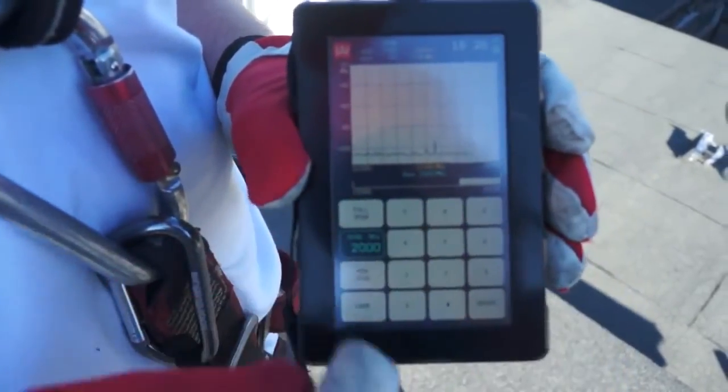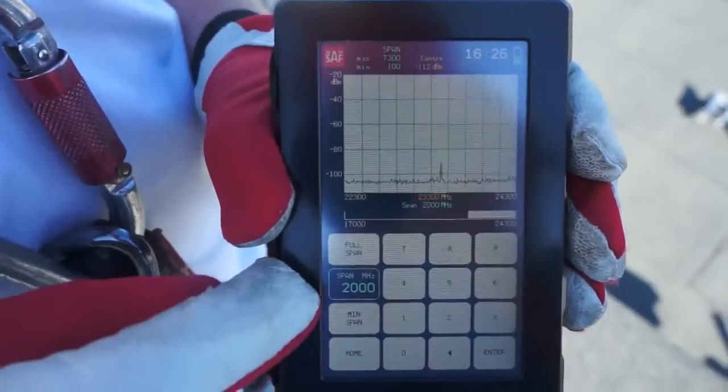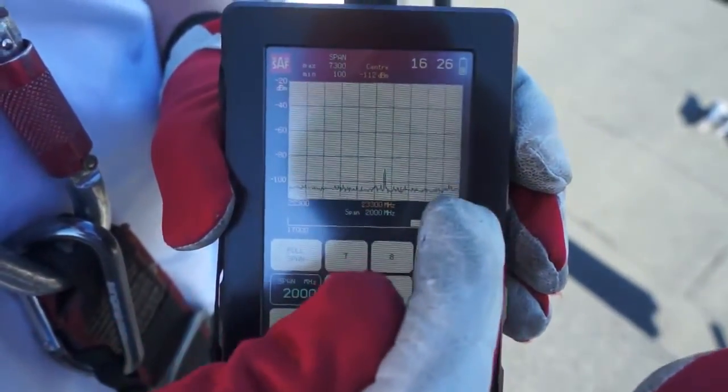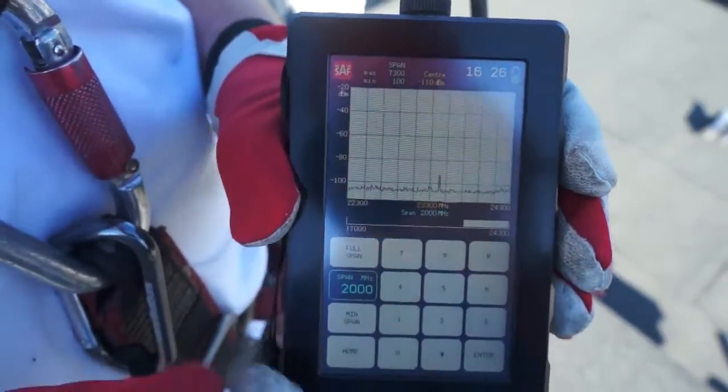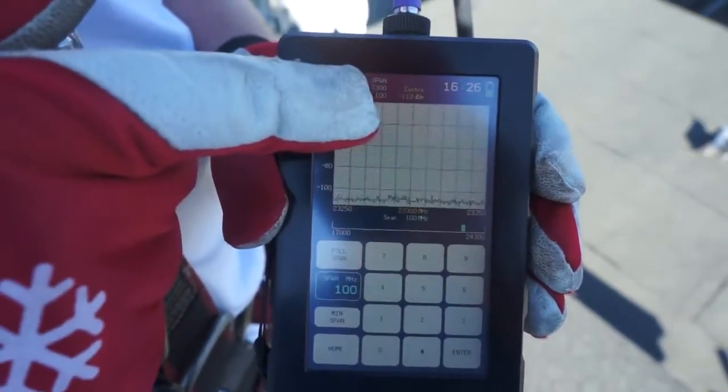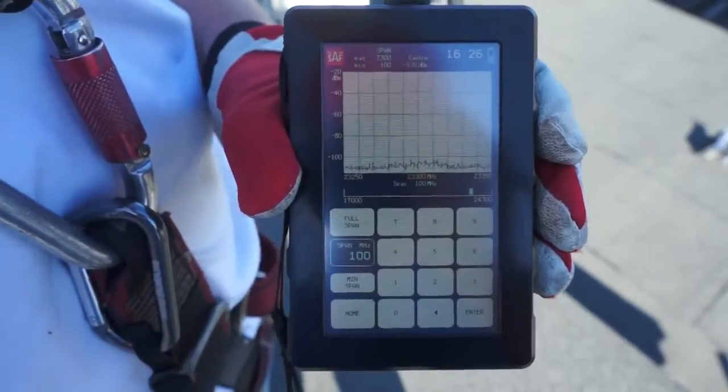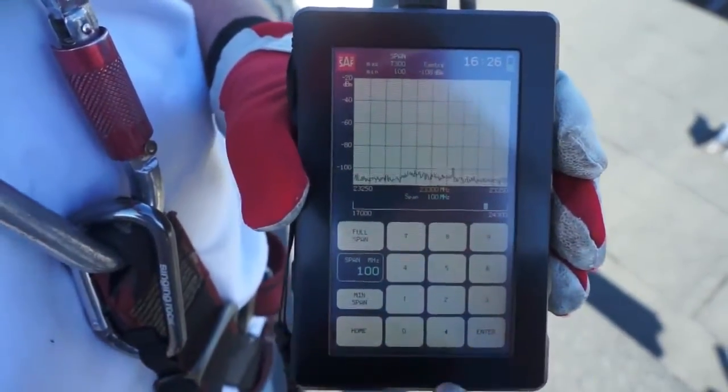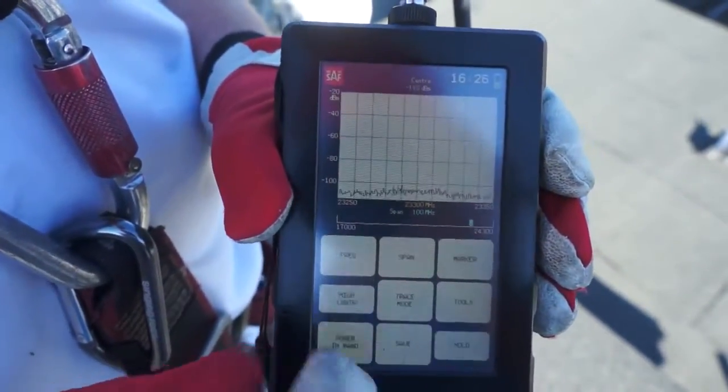Next, we'll adjust the span or the resolution that it's looking at. Right now, it's scanning a complete 2 gigahertz of spectrum. But we want to adjust that down to 100 megahertz, centered on our 23.3 gigahertz, for a very much quicker resolution while we're doing this adjustment.